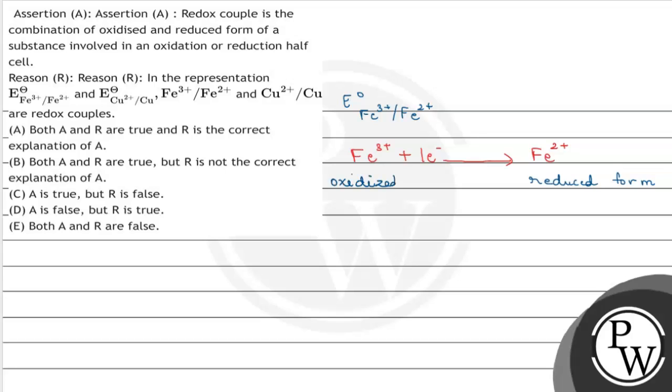Okay, now we have the second representation, which is E0 copper 2+ and copper. In this, which two species are involved? Copper 2+ and Cu in elemental form. So copper 2+ to copper elemental form, what will have to be done? This 2+ charge will have to be reduced. That means 2 electrons will be added here. Okay, so addition of electrons means again what is happening here? Here reduction is happening.